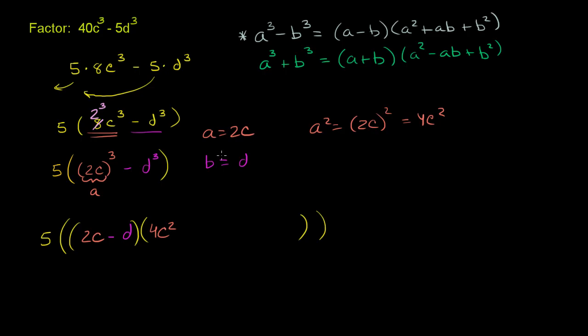Plus ab. Plus a times b. So that's going to be 2c times d. So plus 2c times d. And then finally, plus b squared. And in our case, b is d. So you get plus d squared.